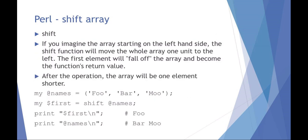Shifting an array — if you imagine the array starting at the left side, the shift function is going to move the whole array one unit to the left, so the first element falls off. Think of shift as the opposite of pop: instead of returning and removing the last element, shift returns and removes the first element. In this example, I've got an array of names foo, bar, and moo. After shifting, the returned value is foo, and my new array becomes bar and moo.